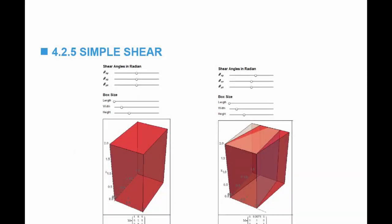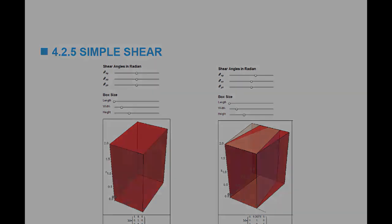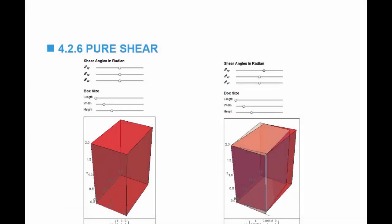Simple shear can be extended to shear angles theta xy, theta xz, and theta yz. On the course website, there is a tool that allows you to change these angles and visualize the effect on the deformation. Similarly, in pure shear, there is another tool that allows you to see the effect of changing three angles on the deformed shape of a box.